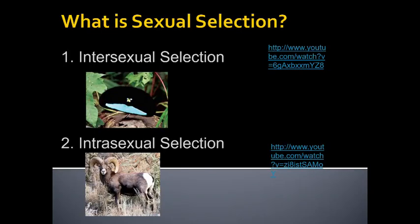Sexual selection is the force of natural selection that acts on a population because of mate choice and the necessity to find a mate. Often it is more pronounced on one part of the population than the other. It can be broadly divided into two classes: intersexual selection and intrasexual selection.